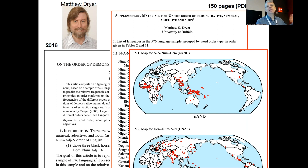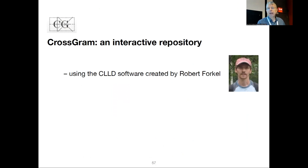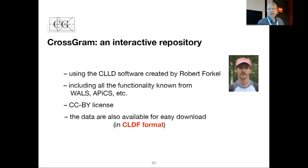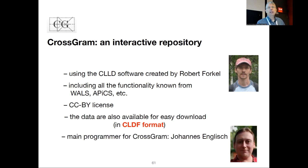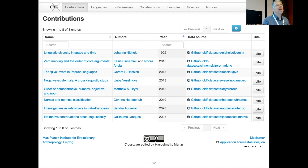He also has handmade maps, and you can look at some stuff in the supplement. But of course, we want the data accessible in a nicer way. So we want something like CrossGram: an interactive repository using the CLLD software, including all the functionality known from other CLLD projects, CC BY license, data available for easy download in CSV format. Johannes Englisch joined me about a year ago and helped me make progress on this. We have these eight initial contributions — for example, Johanna Nichols's data from 1992.